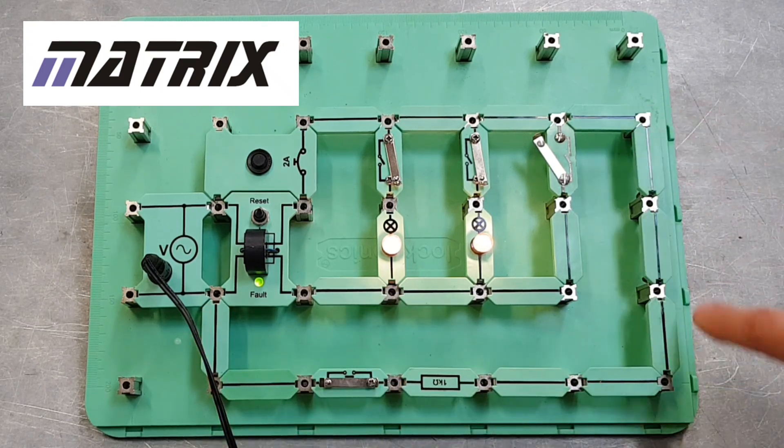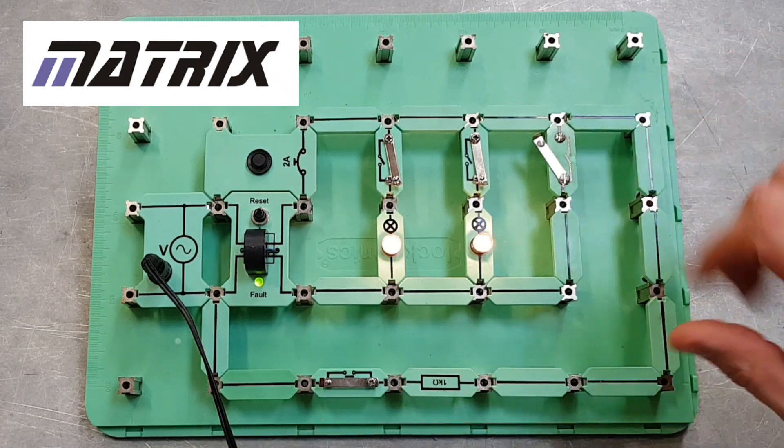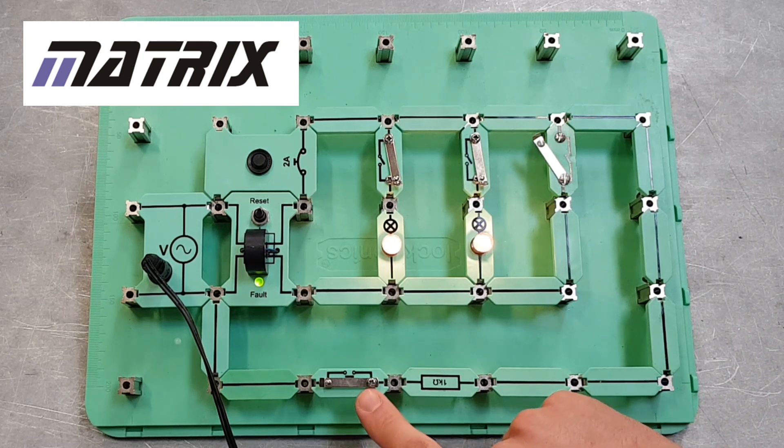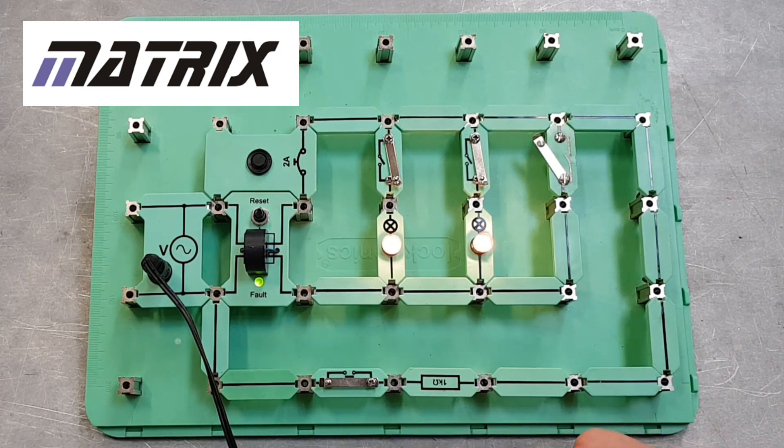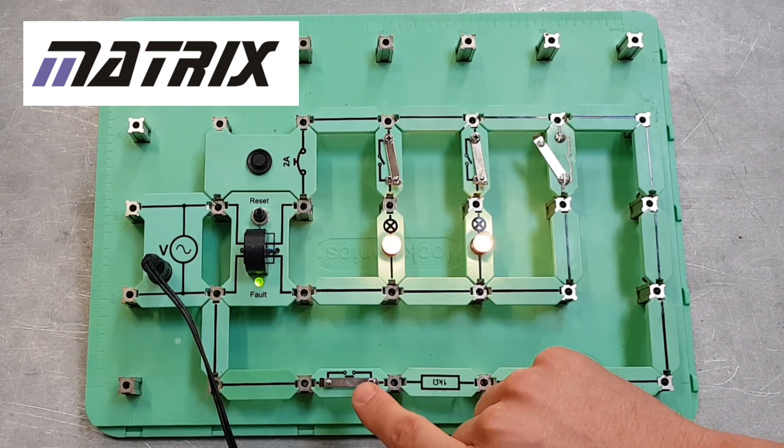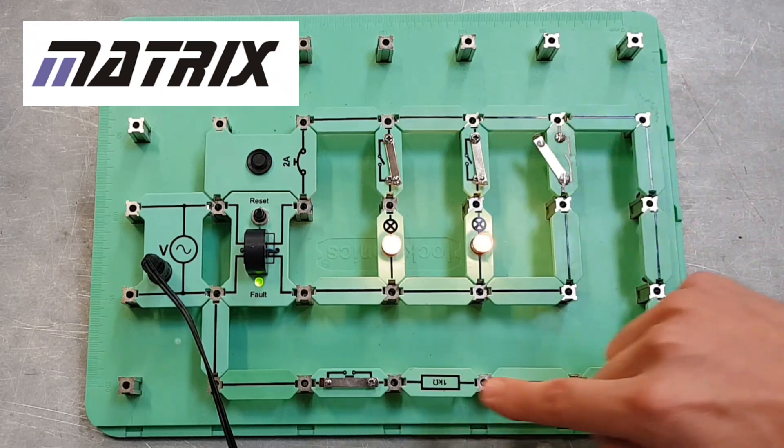If we switch in this one kilohm earth fault, what will happen is current will start to flow around this bit of the circuit. Watch what happens to the RCD component if we press this.